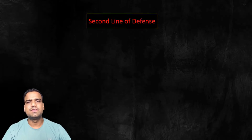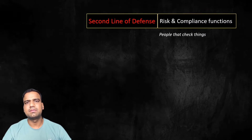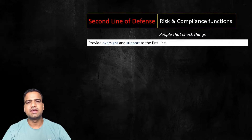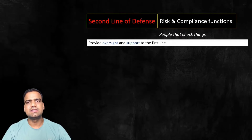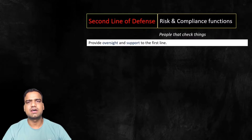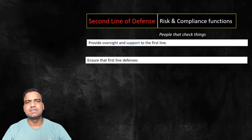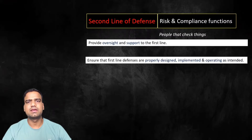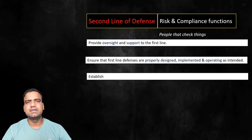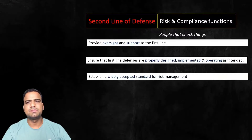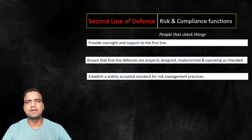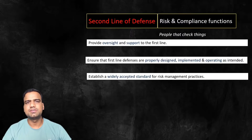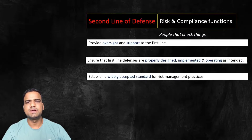The second line of defense typically involves risk management and compliance functions that provide oversight and support to the first line of defense. Within the second line, risk management functions are focused on ensuring that first line defenses are properly designed, implemented, and operating as intended. Establishing a clear and widely accepted standard for risk management practices is important for ensuring the effectiveness and efficiency of an organization's risk management program.